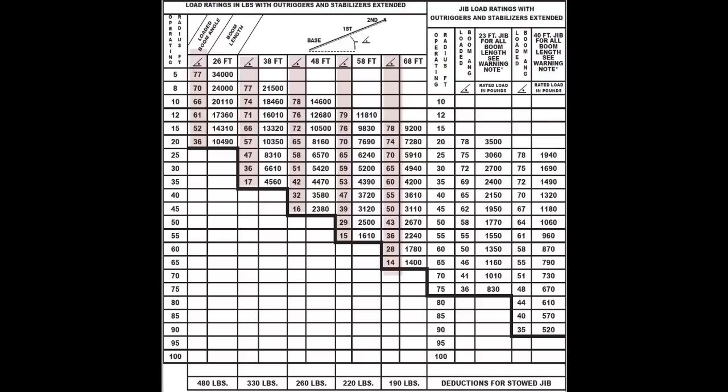The boom lengths are indicated in five sections: 26, 38, 48, 58, and 68 foot.